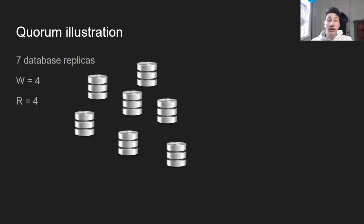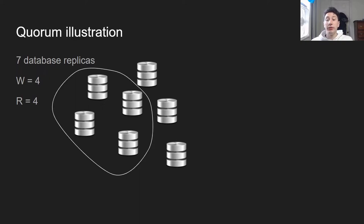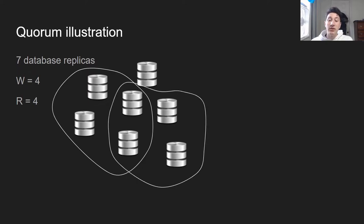To illustrate this with 7 replicas where w equals 4 and r equals 4: let's say I try to write to all 7 replicas but only 4 of them succeed. I'll circle those 4 nodes that now have the updated value. Now when I read from 4 nodes, no matter which 4 I pick, at least one of them is going to have the updated value. As you can see, I've chosen 4 nodes, and in this case two of them have the most updated value, and then I can read repair the rest.